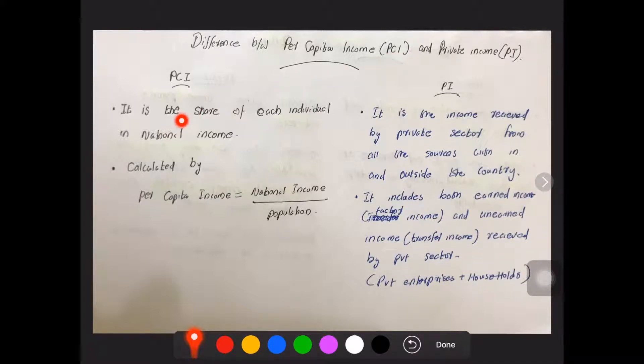So what is per capita income? It is the share of each individual in national income. It can be calculated by: per capita income equals national income divided by population. So the individual share in national income is called per capita income.